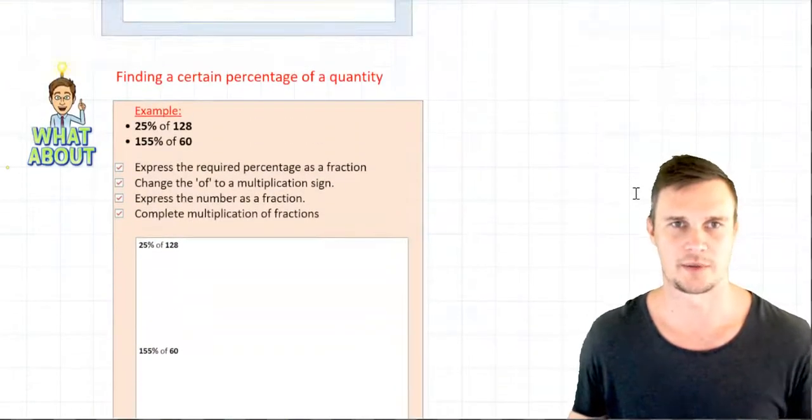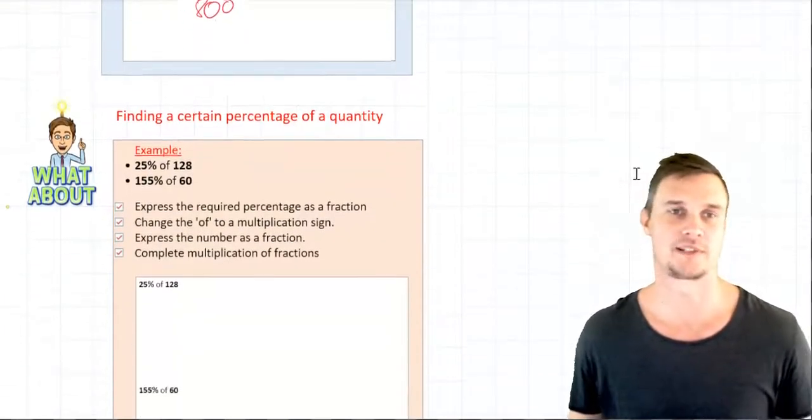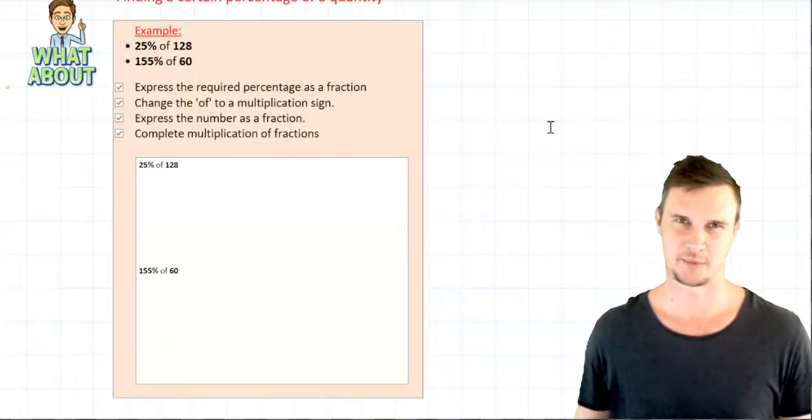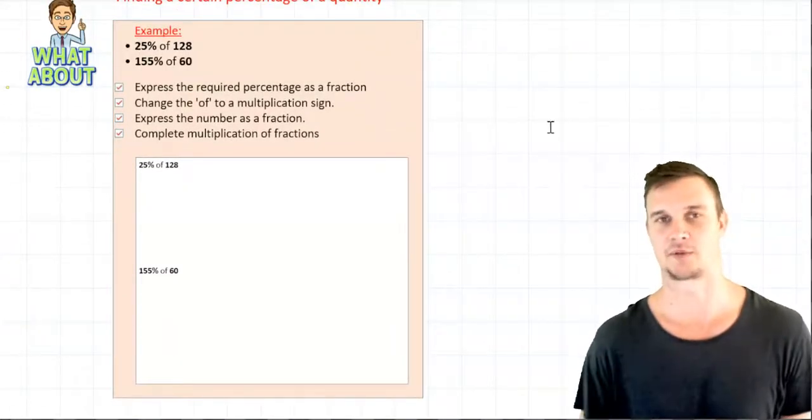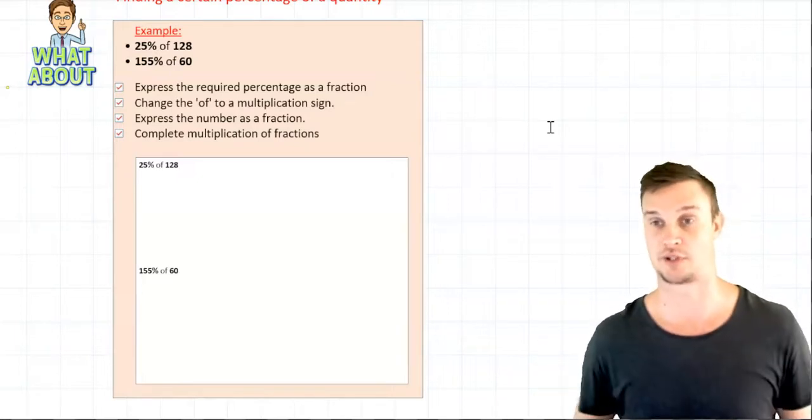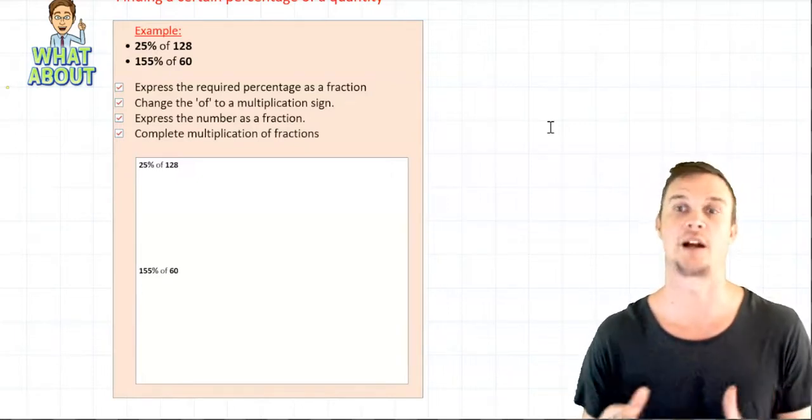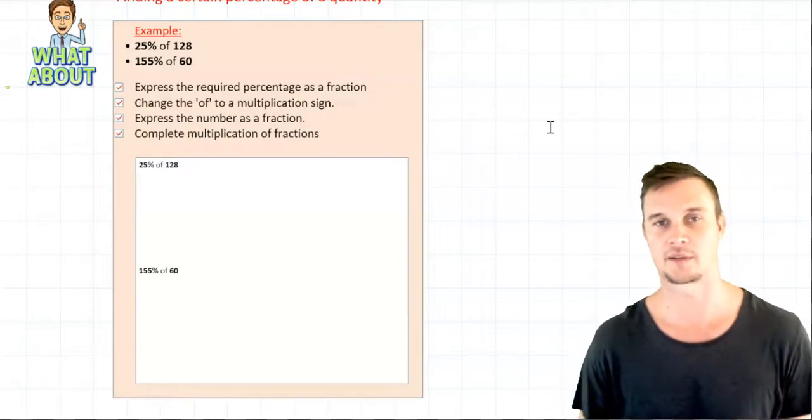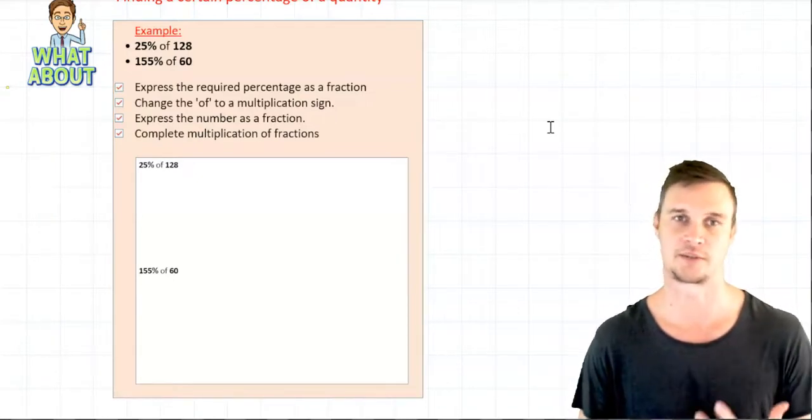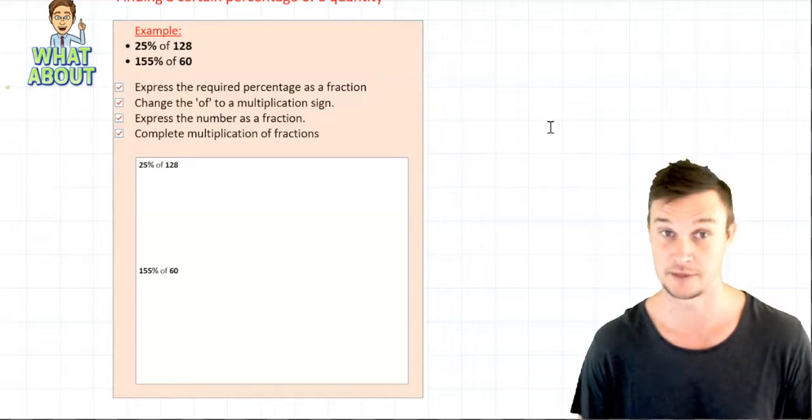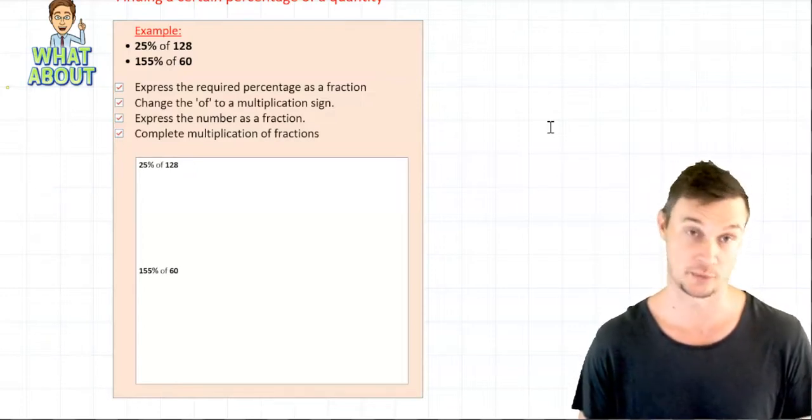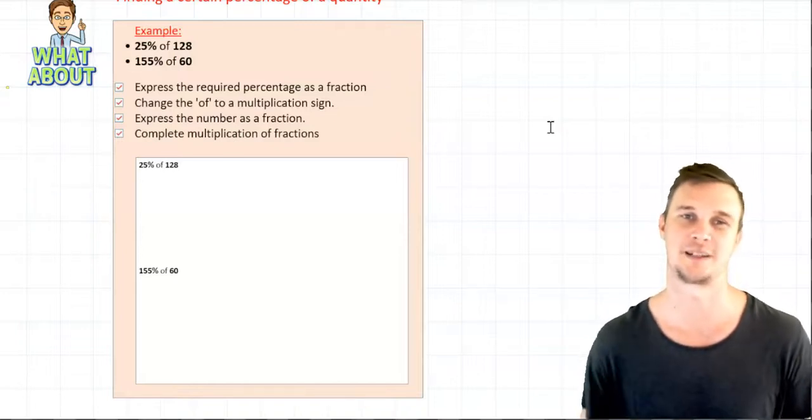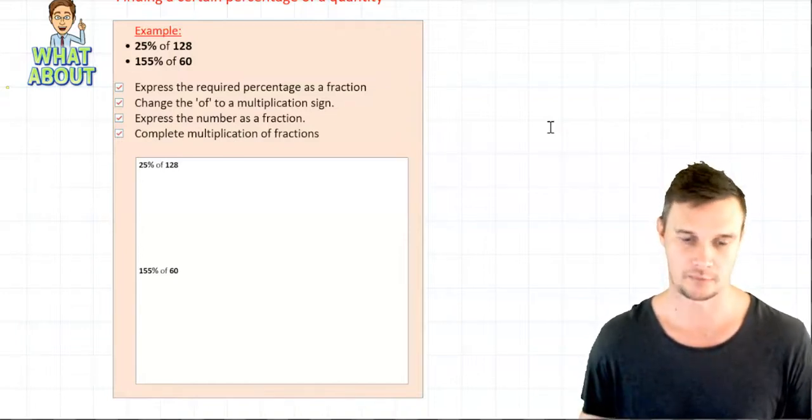So we want to continue now with a bit more of a common thing that we will often see, and that is finding a percentage of a quantity. So for example, as an example we gave at the start, it was 25 percent of a shirt that cost 128 dollars, well how much is that. And there's a couple of ways that you're going to do that. The first thing I'll get you to write these four steps down is you need to express the required percentage as a fraction and then change the of to a multiplication sign and then express the number as a fraction, finally by completing the multiplication of fractions.